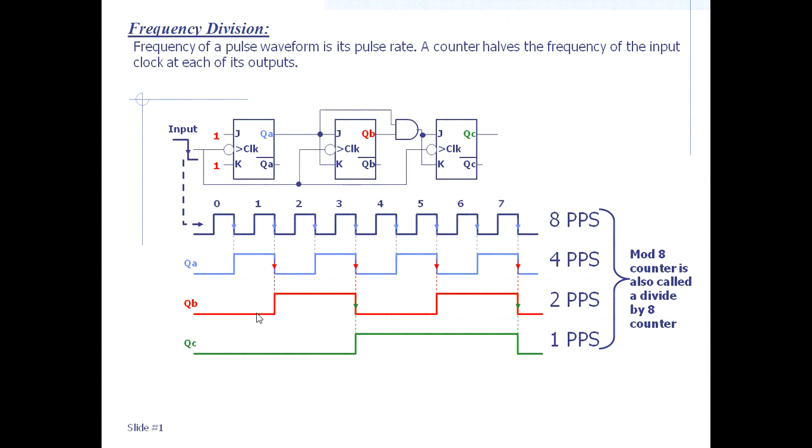It is divided by 4 in this QB, and the output of QC again becomes half, so 1/8. This is how the frequency division takes place in a counter.